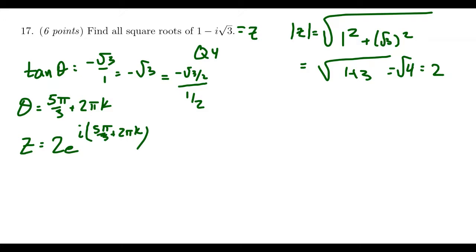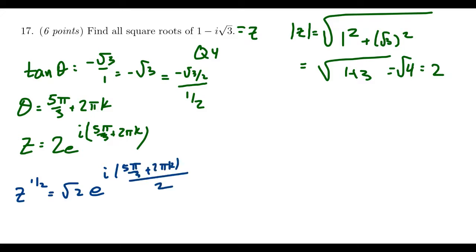That's the hardest part of the problem. The next step is to take the square root. If we take z to the one-half power, we get the square root of two, and then e to the i times the angle divided by two — so we get five pi thirds plus two pi k, all divided by two. That gives us root two times e to the i times (five pi over six plus pi k).